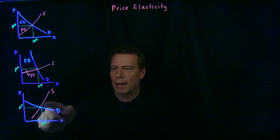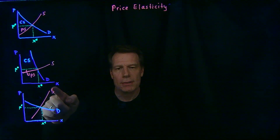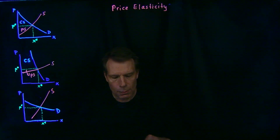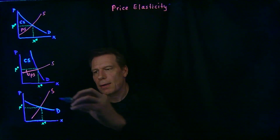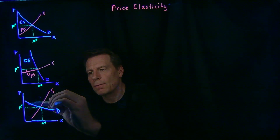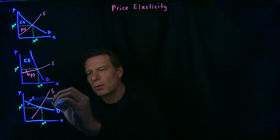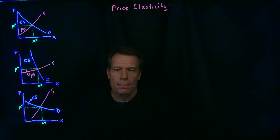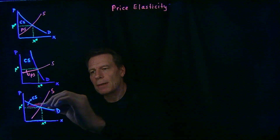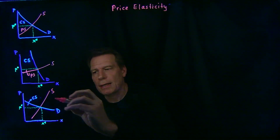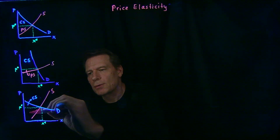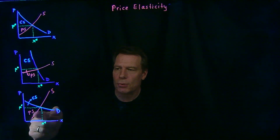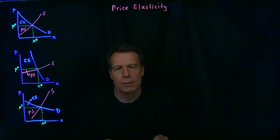Or suppose the supply curve was relatively steep and the demand curve was relatively shallow. Consumer surplus is the area above the price up to the demand curve, so it'd be this relatively small area. Producer surplus is the area below the equilibrium price down to the supply curve, so that would be this relatively large area. So now producer surplus is larger than consumer surplus.